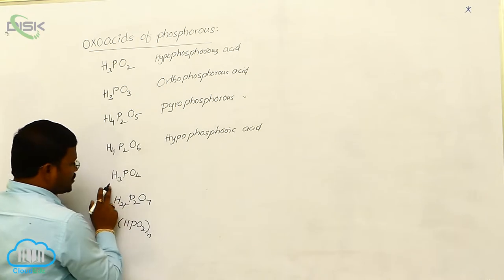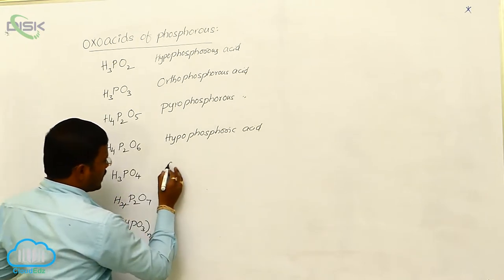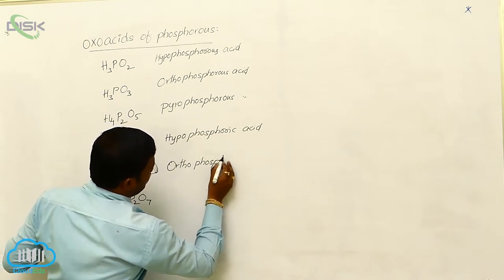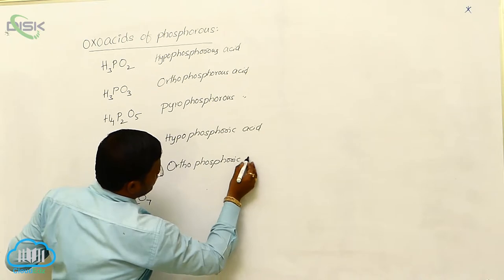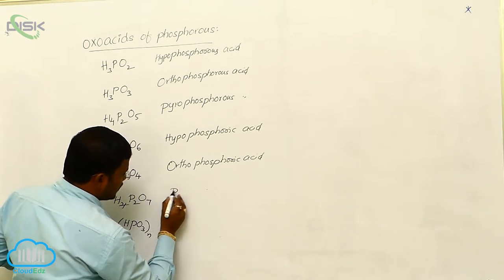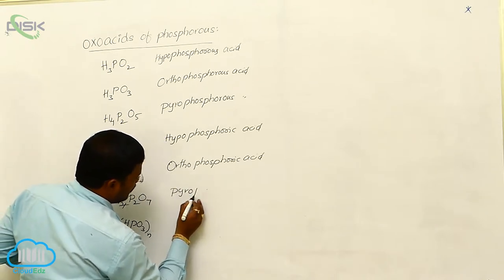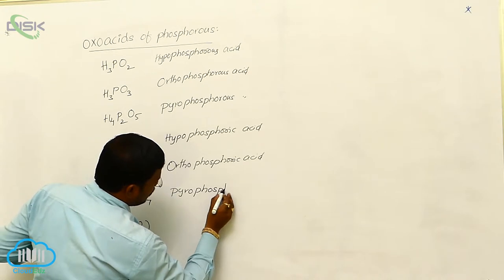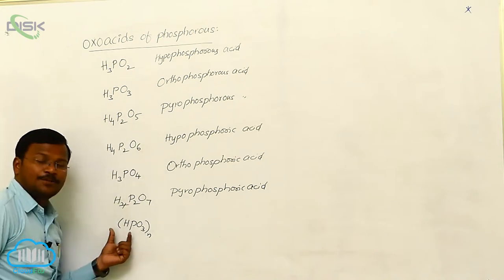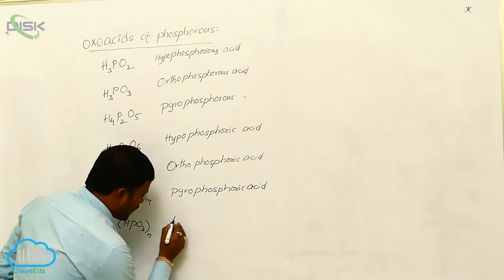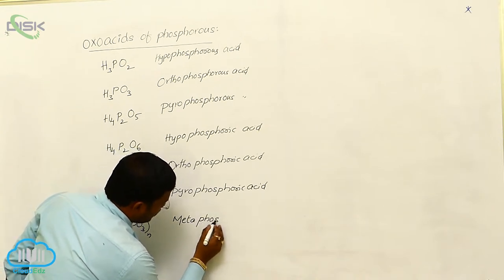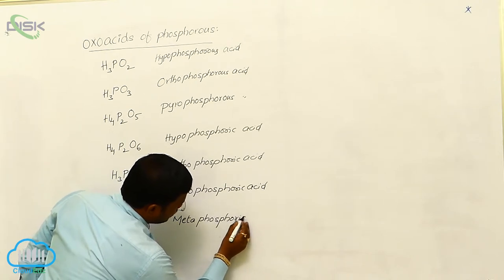H4P2O6 is called Hypophosphoric Acid, whereas H3PO4 is called Orthophosphoric Acid. H4P2O7 is called Pyrophosphoric Acid, and HPO3 is called Metaphosphoric Acid.